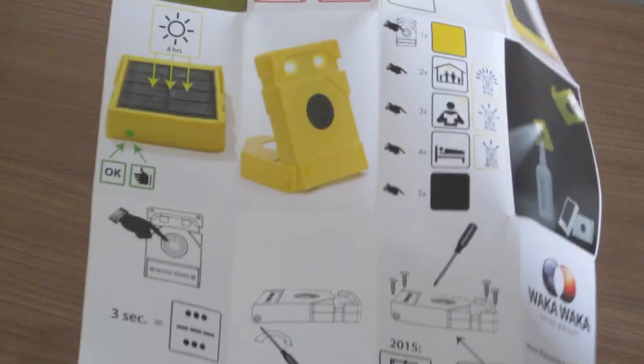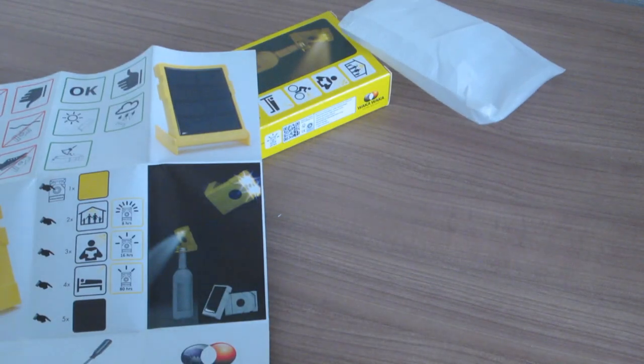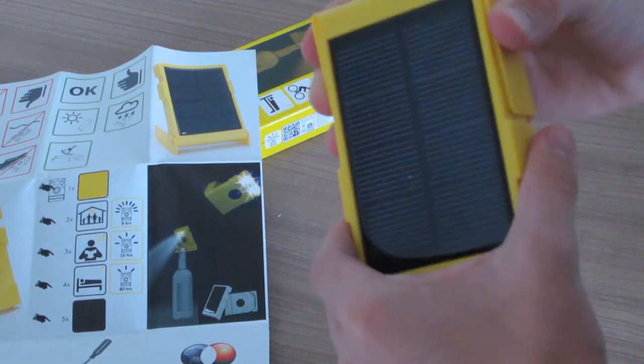The solar panel can provide a fully charged battery in as little as four or five hours near the equator, a bit longer the further north or south you go.